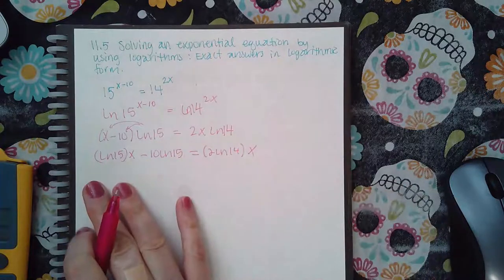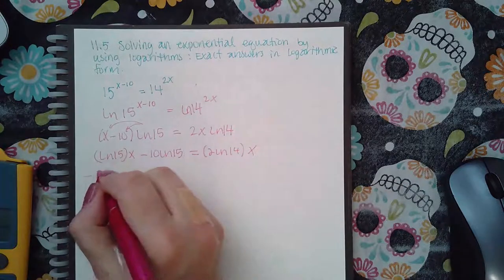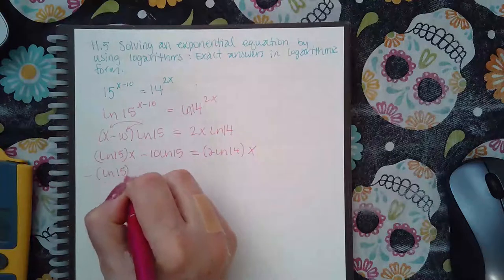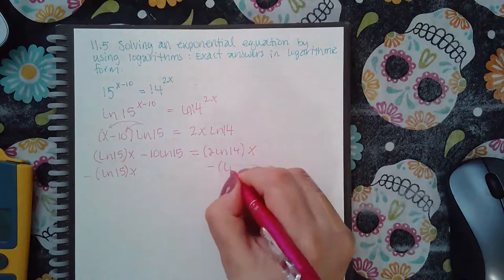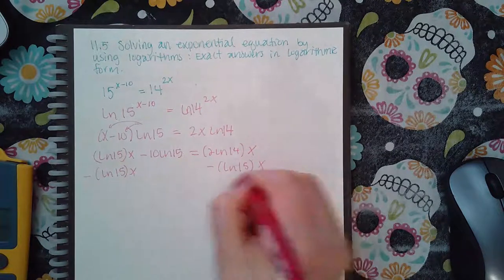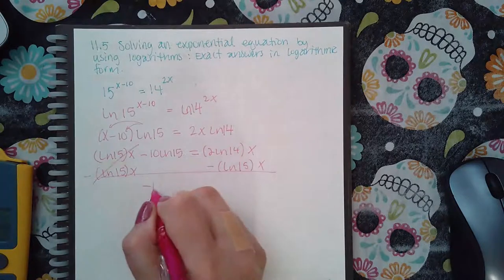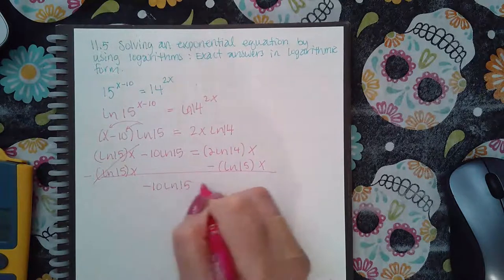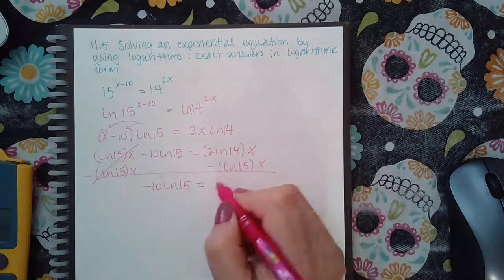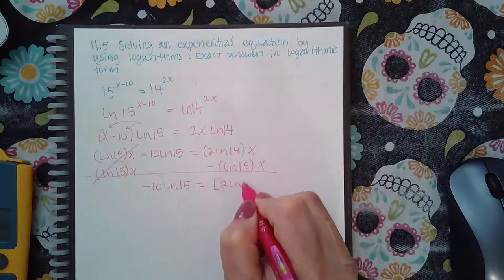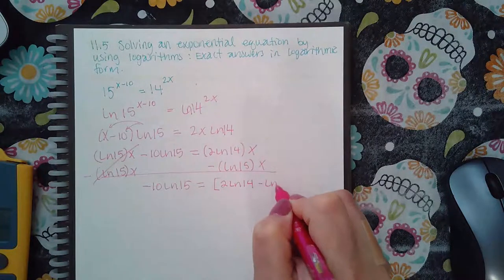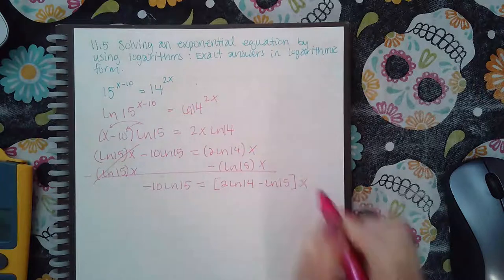So I do want to solve for x, so I'm going to get all the x's to one side. So I'm going to subtract this term on both sides. And then I'm going to have 10 ln of 15 equal to—and now the coefficient will become 2 ln of 14 minus ln of 15. And that will be the coefficient for x.